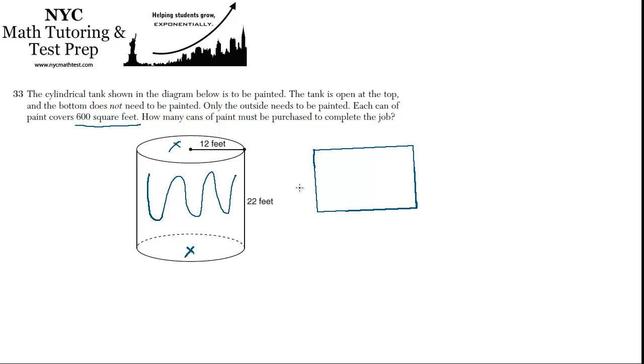So imagine a rectangle where we've unrolled the label on the can of soup, and one dimension is this height, it's this 22 feet. And what's this dimension along the top? If we've unrolled the sides of the can, it's like the circumference of a circle, right?